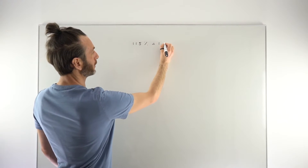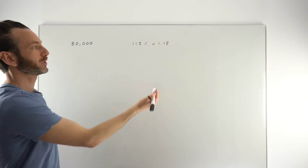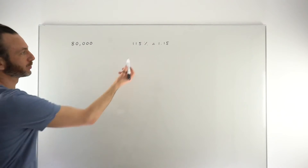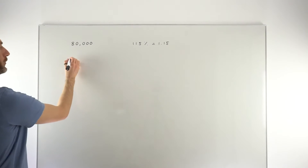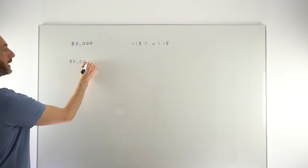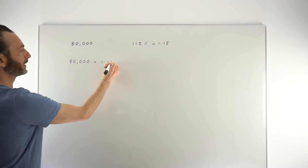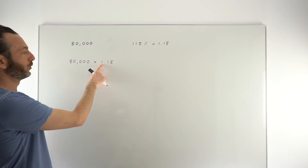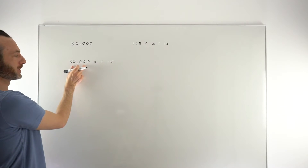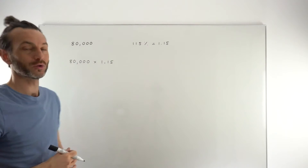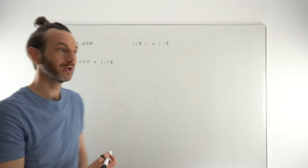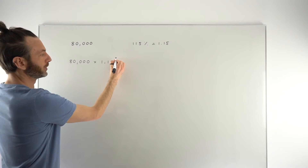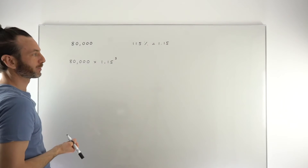115% as a decimal is represented by 1.15. If it was 105% it'd be 1.05. Converting your percentage into a decimal is really the starting point. So if we take the original value 80,000 and multiply it by 1.15, that's going to calculate 15% of 80,000 and add it on to the original starting value. We want to do that three times over three years, but you don't need to repeat the process — just raise the percentage change to the power of the time period, in this case the power of three.